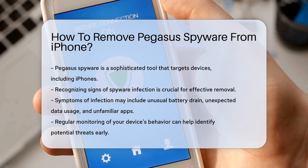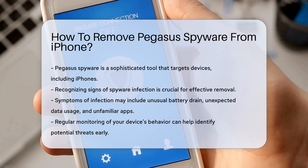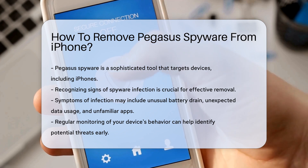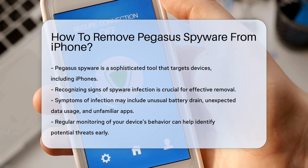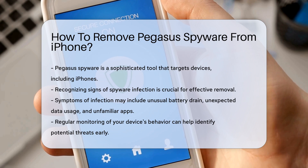Firstly, it is essential to recognize the signs of spyware infection. Unusual battery drain, unexpected data usage, and unfamiliar apps may indicate a compromise. Regularly monitoring your device's behavior can help identify potential threats early.